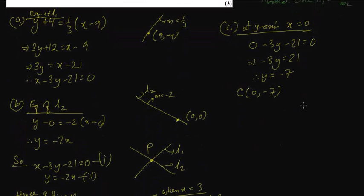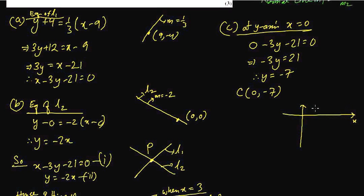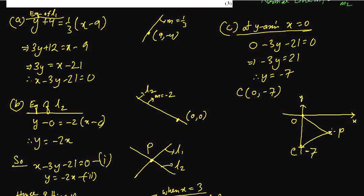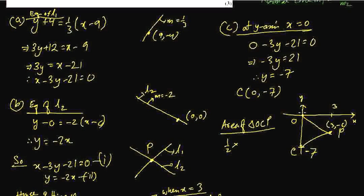Now we have to find the area of triangle OCP. It's helpful to draw a little diagram: the x-axis, the origin O at (0, 0), the y-axis, the point C at (0, minus 7), and P at (3, minus 6). The area is half times base times height. The base from O to C is 7 units. The height is the x-coordinate of P, which is 3 units. Length cannot be negative. So area equals half times 7 times 3 equals 21/2.